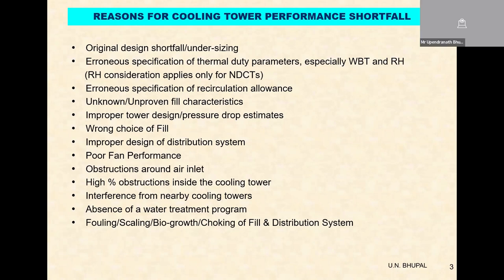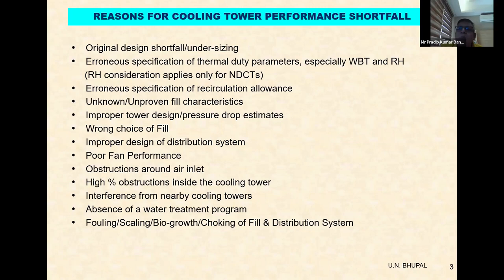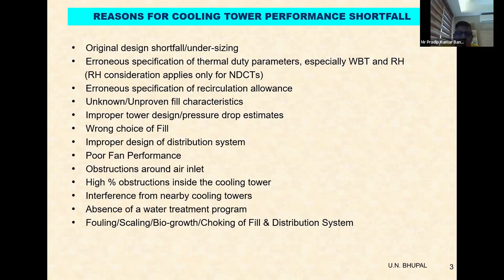One is the NLC Tuticorin Tower plant, where during the performance test it was seen that the relative humidity did not cross 47% during the two days of the test for the NDCT. The specification by a consultant to NLC at the time of tendering had specified 73% RH. So there is an inherent undersizing of the cooling tower without realization that the design RH is 70% instead of the real level of maybe 45 to 50%. These are certainly important aspects when it comes to specifying the ambient duty conditions for NDCT or IDCT.